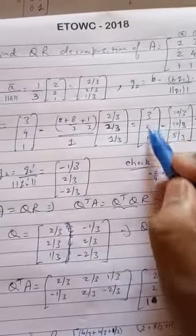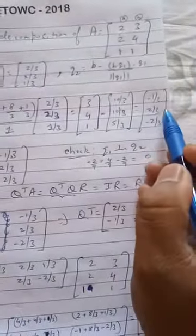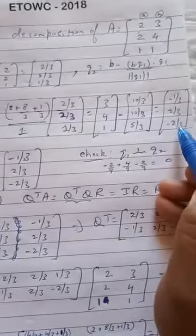Therefore, this becomes 3, 4, 1 minus this value. And once you subtract the value becomes minus 1 by 3, 2 by 3 and minus 2 by 3.